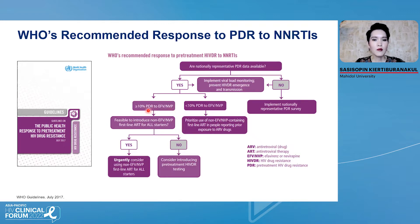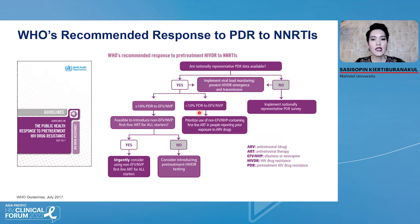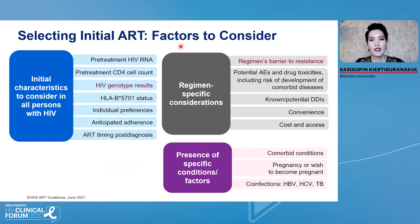If a country has pre-treatment HIV drug resistance to NNRTIs of more than 10% and it is feasible, it is very urgent to consider using non-NNRTI-based regimens for first-line ART for all starters. If it is not feasible, that country should consider introducing pre-treatment HIV drug resistance testing. If the country has pre-treatment HIV drug resistance to NNRTIs of less than 10%, that country should prioritize use of non-NNRTI-containing first-line ART in people reporting prior exposure to ART.